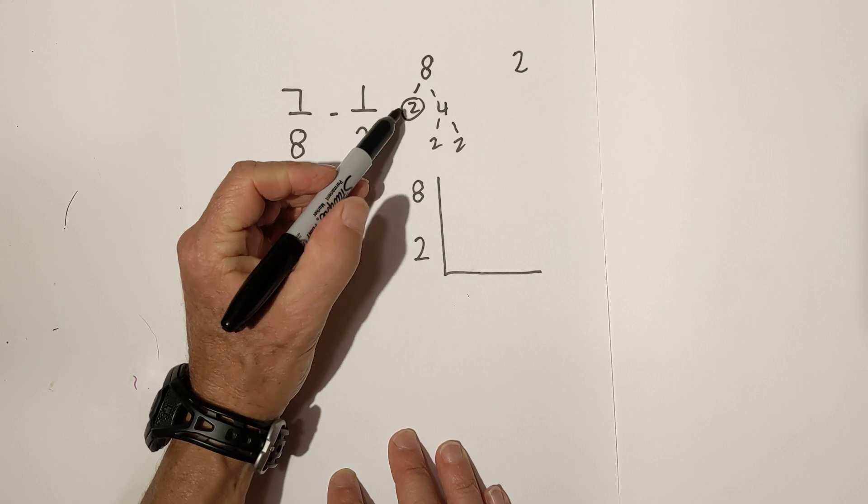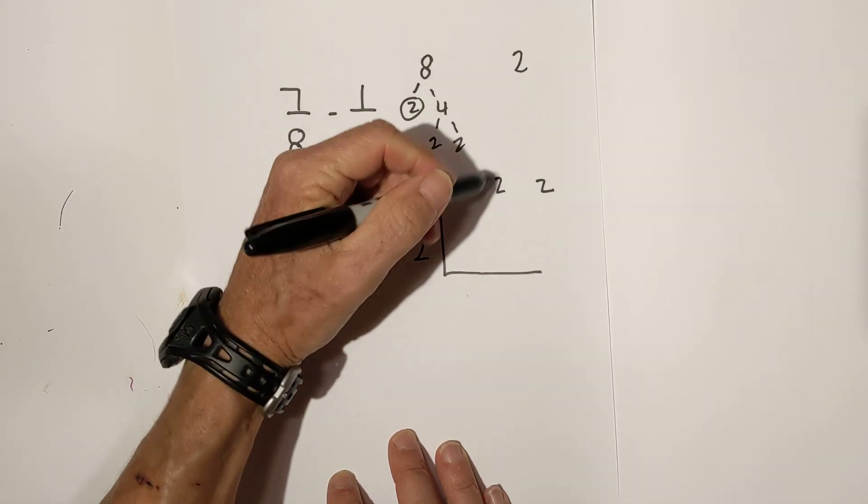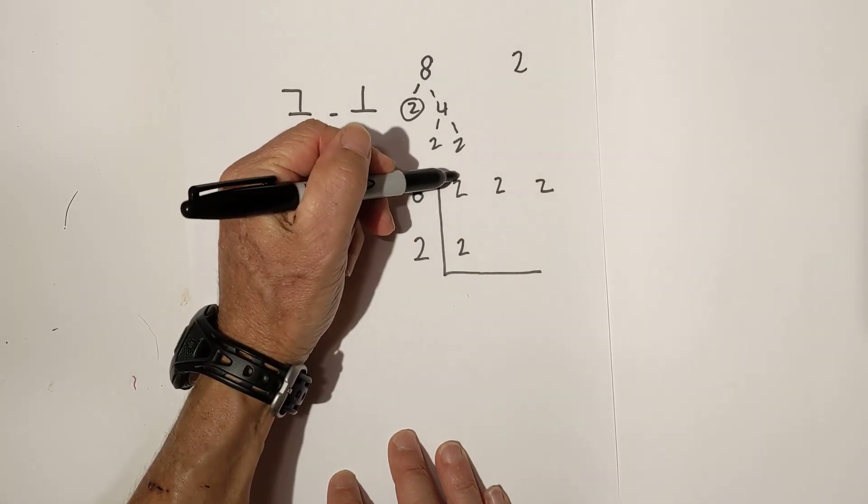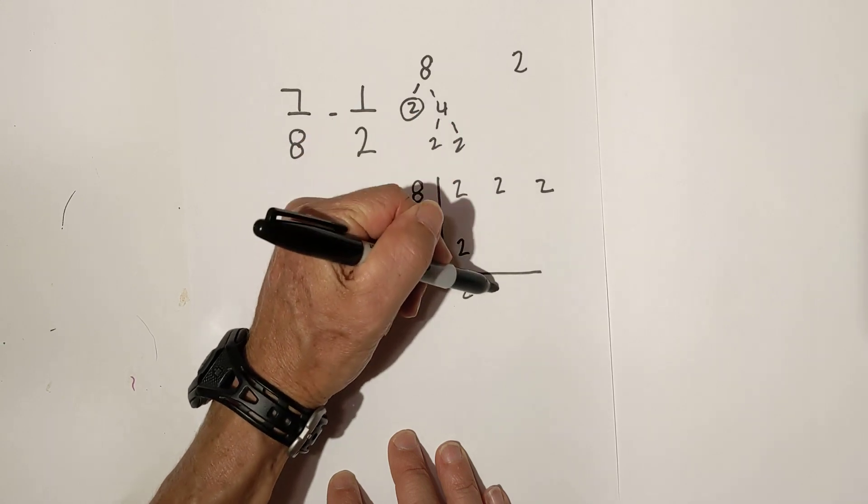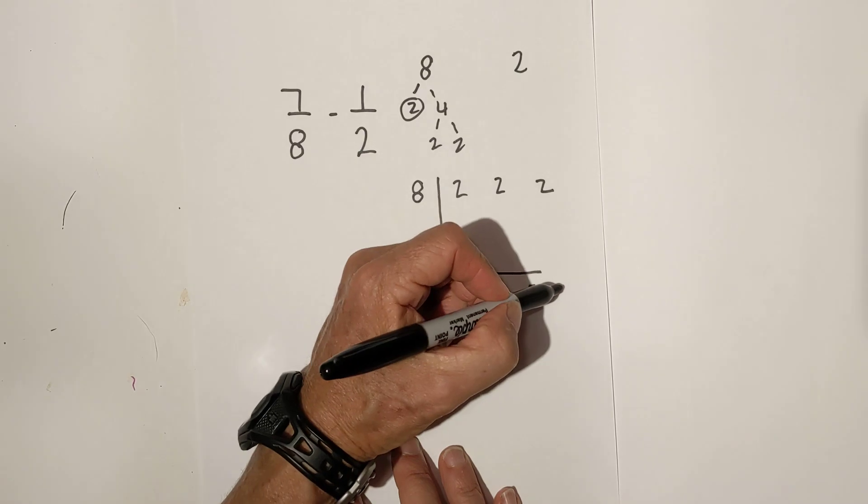For 8, I'm going to write the 2, the 2, and the 2. And for the 2, I'll write a 2. Remember, if you have more than one in the column, you just bring down one number. And you just multiply these together: 2 times 2 is 4, 4 times 2 is 8.